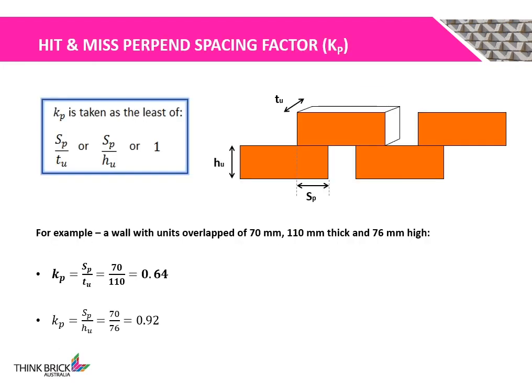While the perpen spacing factor Kp is commonly taken as 0.6 for Hidden Mist Walls, Kp must be calculated with respect to the problem at hand. Kp is taken as the least of: unit overlap divided by the thickness of the unit; unit overlap divided by the height of the unit; or 1. For example, a wall with unit overlap of 70 mm, 110 mm thick, and 76 mm high gives Kp calculated as 0.64.